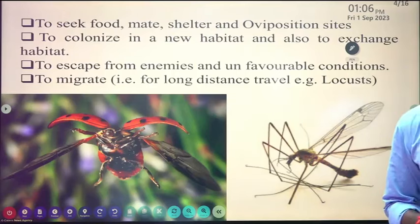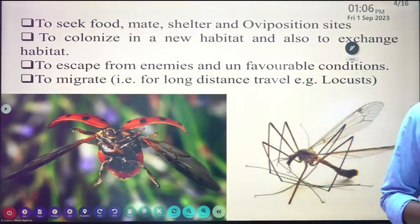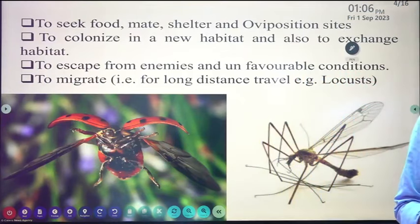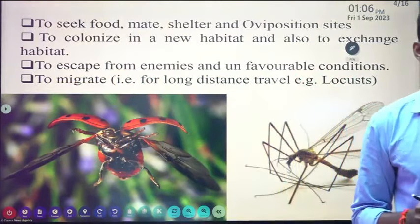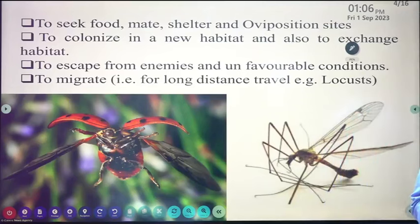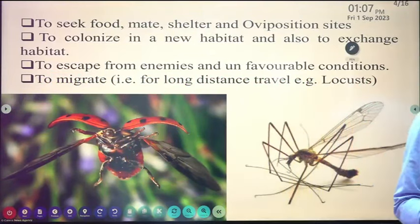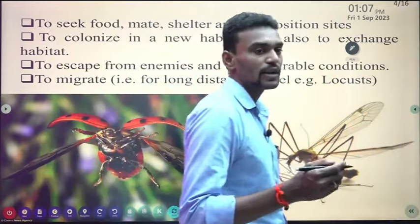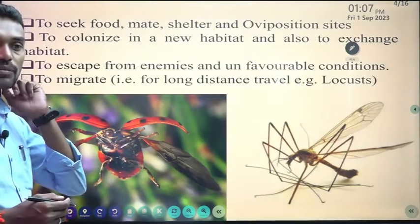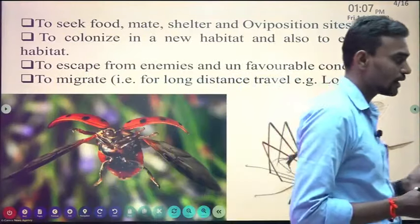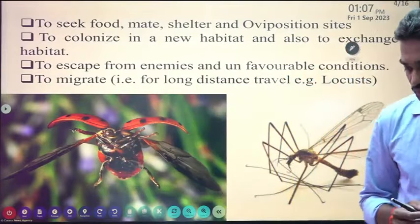Flight is used for several purposes: to seek food, to find shelter, to find oviposition sites where they lay their eggs and complete their life cycle. It is also used for colonization — for example, a bee colony can transfer from one place to another using wings. Additionally, flight helps insects escape from natural enemies and for migration, as seen in locusts and grasshoppers that gather and migrate from one place to another.